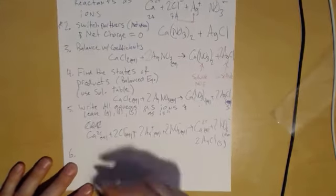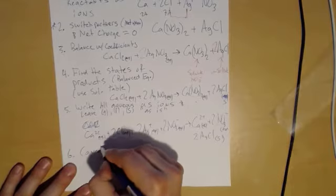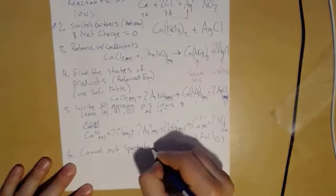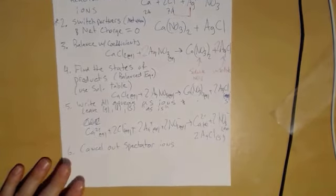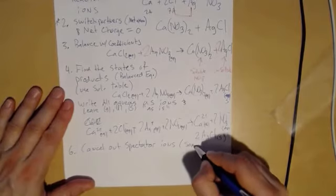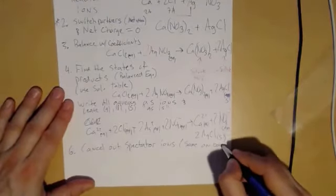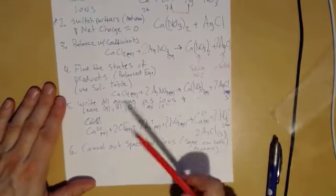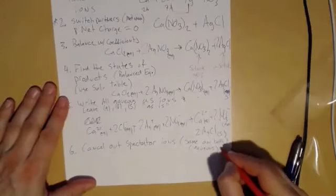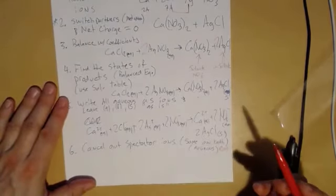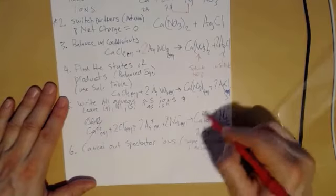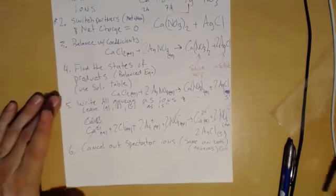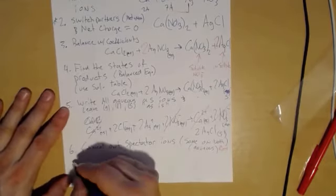So six is cancel out spectator ions. Okay. And so in this case, these are what are the same on both sides, meaning probably aqueous. And so if I, let's do this in red. So it looks to me like calcium was aqueous and the two nitrates, they were just floating around. They didn't form the solid.